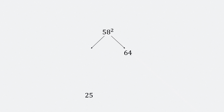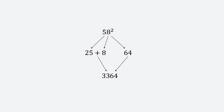The final example is 58 squared. You take 8 and square it — that's 64. Now, you take 5 and square it — that's 25. Add 8 to 25. The last two digits will be 64, and the first two will be 25 plus 8, which is 33. So, 58 squared is 3364. That's all for numbers in the 50s — a fairly simple procedure you can master in a few minutes to find the square of any number in the 50s in less than 3 seconds.